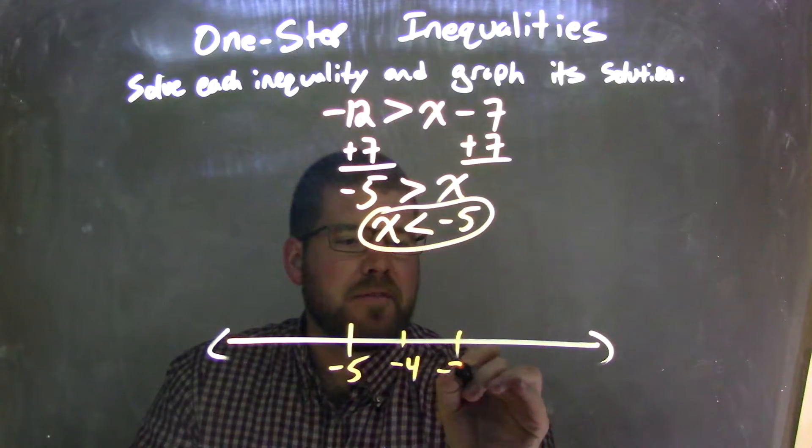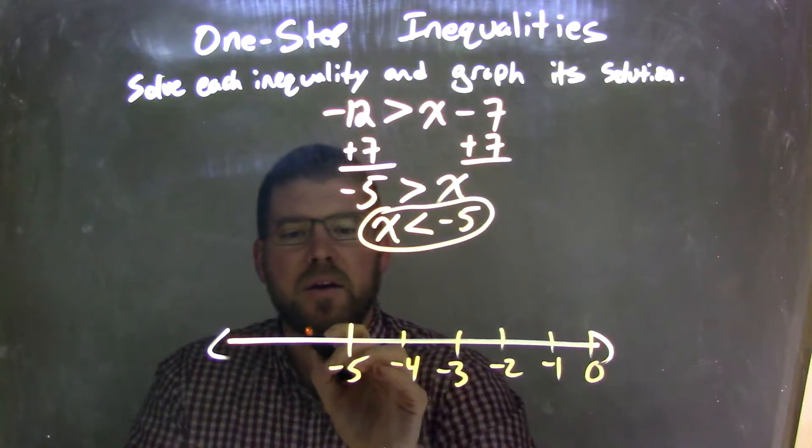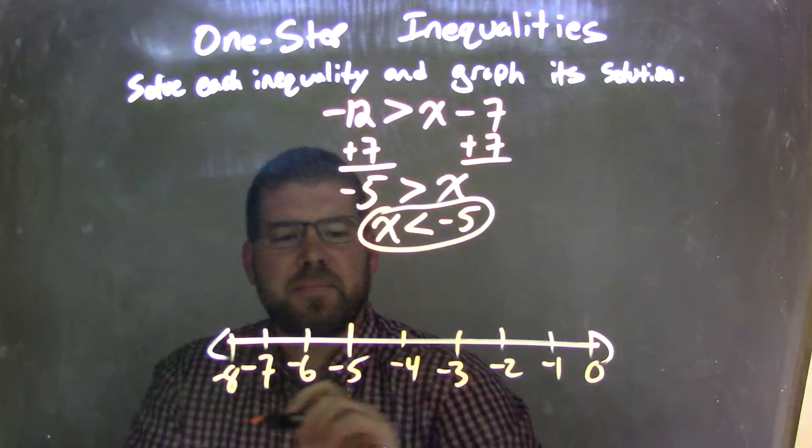Negative 4, negative 3, negative 2, negative 1, 0, negative 6, negative 7, negative 8, okay?